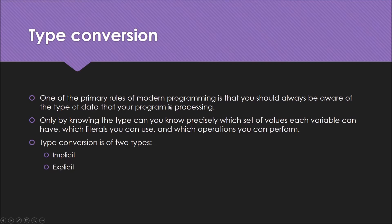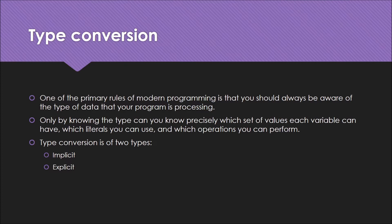One of the primary rules of modern programming is that you should always be aware of the type of data your program is processing. Only by knowing the type can you know precisely which set of values each variable can have, which operations you may perform. So you need to understand what value you are working with — if you have a double value and an integer value, you need to understand what the calculations produce.